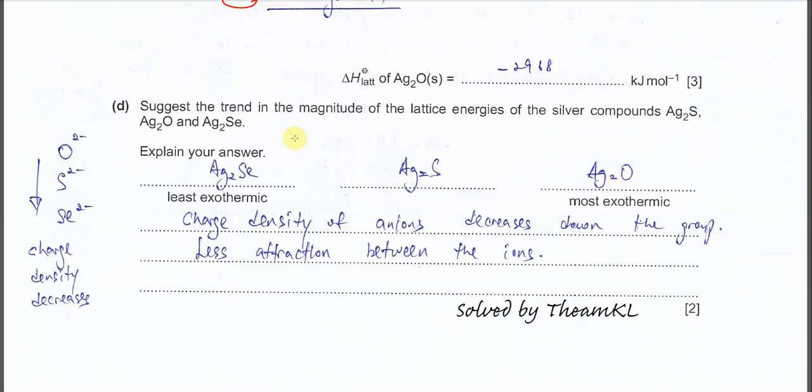Part D suggests the trend in the magnitude of lattice energy of silver compound. So we have silver sulfide, silver oxide, and this silver selenide. This one, because we know that silver is always the same, so the difference is the group 16 elements. So now we have this different charge density anion. So we know that the oxide is smallest in size, so it has the greatest charge density.